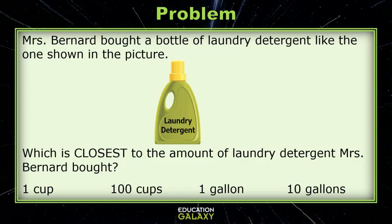Think about household items that you use. You could drink a cup of water. You could buy one of those big gallon jugs of water at the store. Well, this container looks too big to be one cup but too small to be 10 gallons. 100 cups definitely seems like too much. Our detergent actually seems similar size to the gallon jug of water.